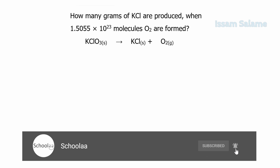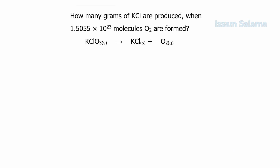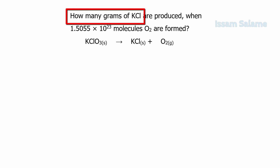Here we have: how many grams of potassium chloride are produced when 1.5055 × 10²³ molecules of oxygen are formed? The known quantity is number of particles and the unknown quantity is mass. Before we do anything, we balance the chemical equation by multiplying potassium chloride by 2 and oxygen by 3. Now the equation is balanced.